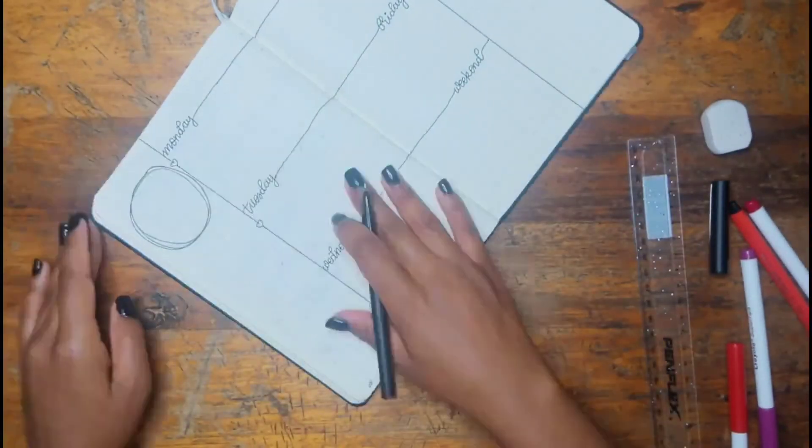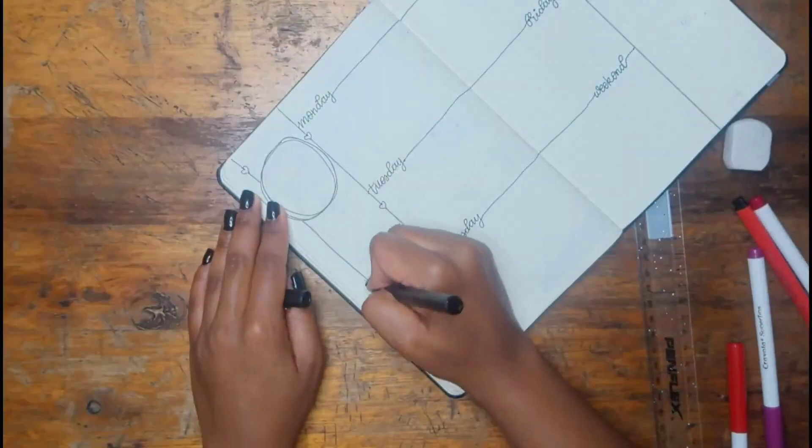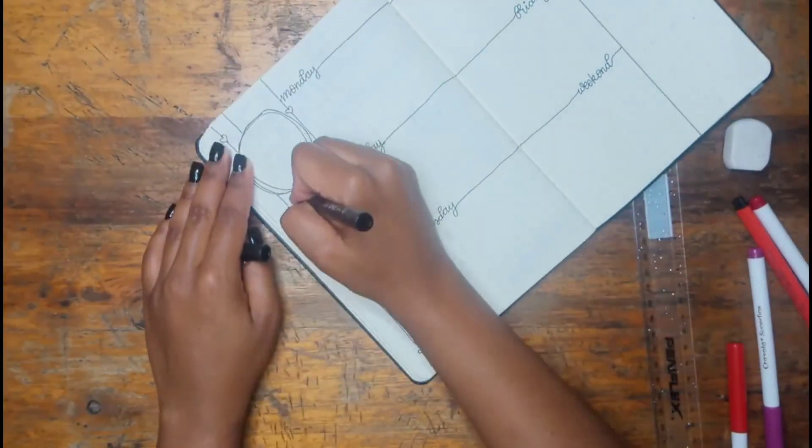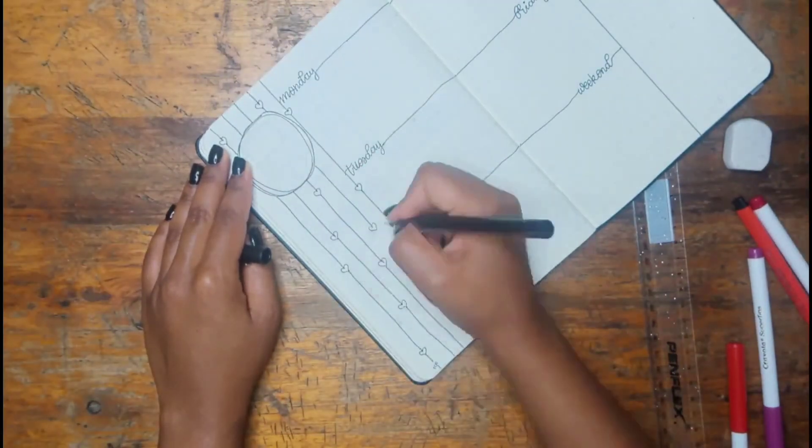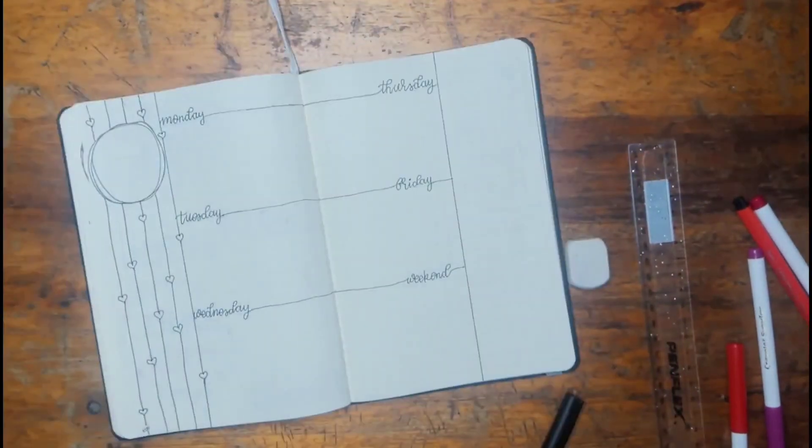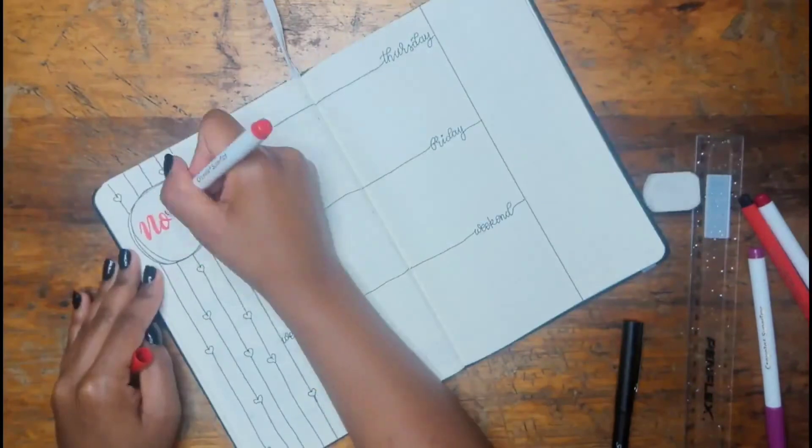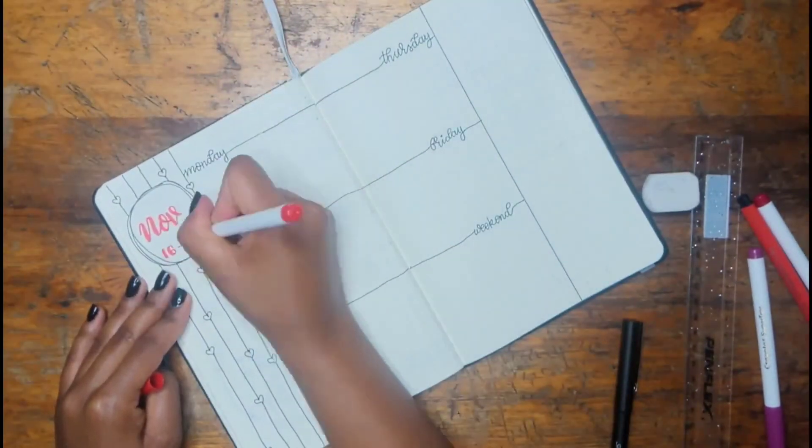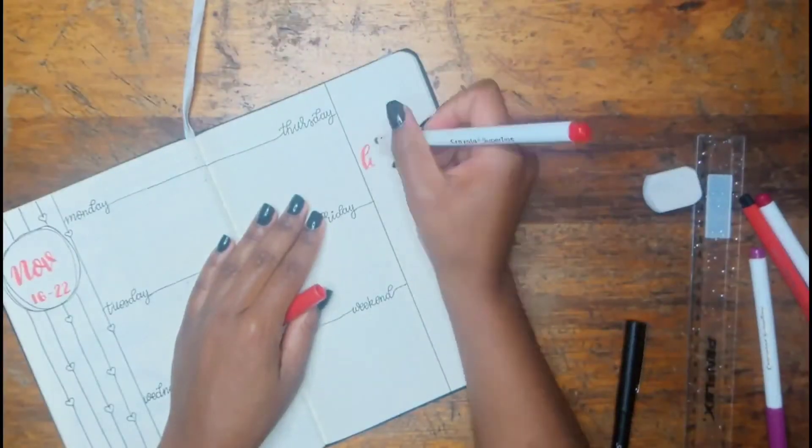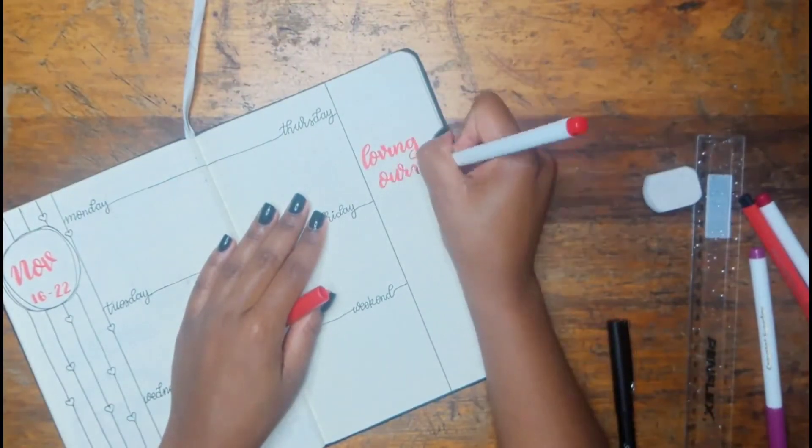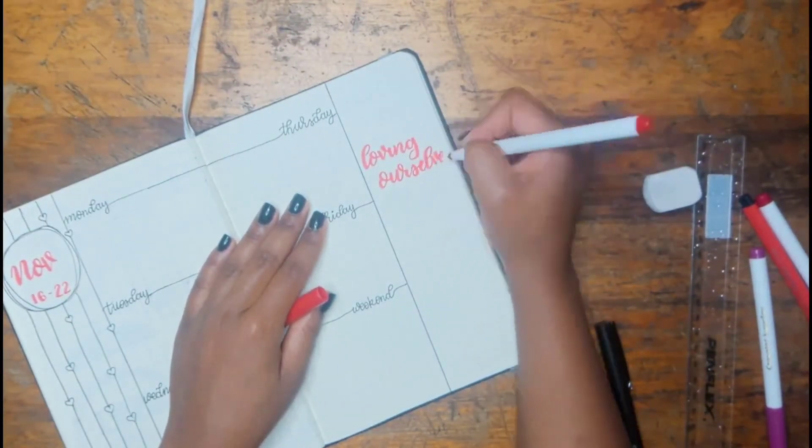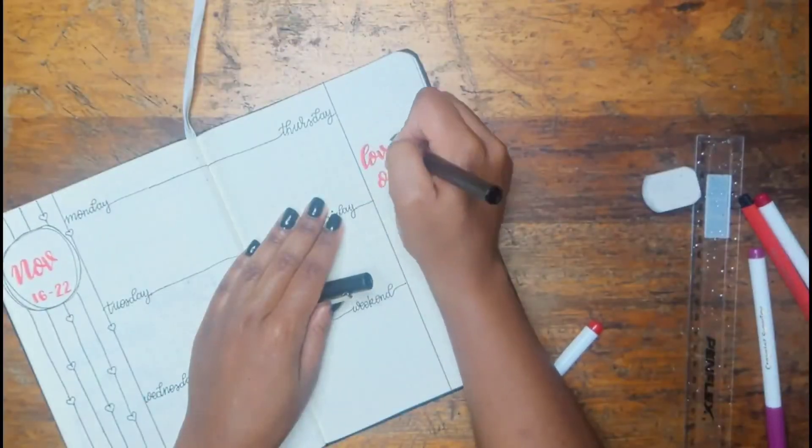I just used the middle part of the spread for my planning and then I just did some decorative elements on the sides. I drew this kind of hanging strings with hearts and of course the wreath, I could not leave that out. This is I think the second last week of November, yes it's the 16th through the 22nd of November.